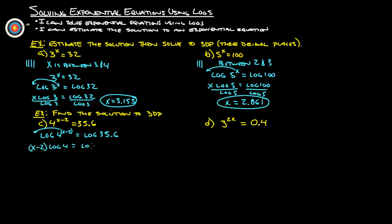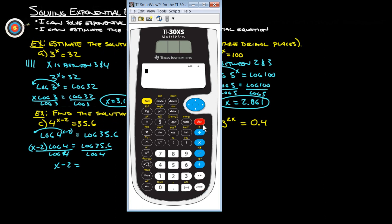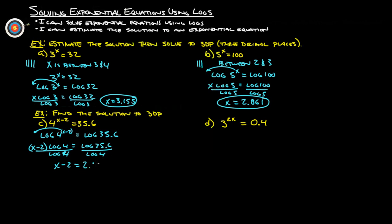(x minus 2) log 4 equals log 35.6. Divide both sides by log 4. And we get x minus 2 has to equal whatever that is. So let's plug that in and see what we get. So we do log of 35.6 equals, divide by log 4 equals, and you get 2.577. And then we have to add the 2 to get x by itself. So x in this case is going to equal 4.577.